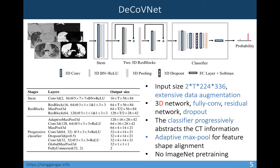No matter how large T is, the adaptive pooling output is fixed at 16. The second stage is a normal static max pooling, and the third is a global max pooling which produces a single one-dimensional feature vector for final classification.